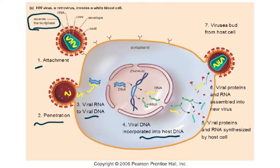You can see how the viral DNA becomes part of the host DNA. Step five: viral proteins and RNA are synthesized by the host cell, because the virus uses the ribosomes of the white blood cell to make its own proteins and uses the cell's amino acids. Then the viral proteins and RNA are assembled into new viruses, and the viruses bud off from the host cell.